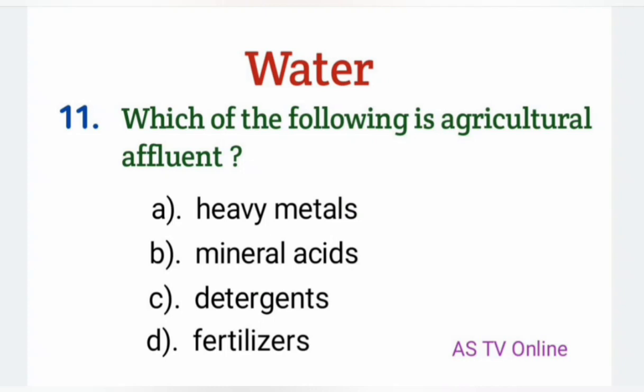No. 11: Which of the following is agricultural effluent? Heavy metals, mineral acids, detergents, fertilizers — Right answer is D, fertilizers.